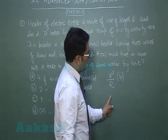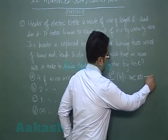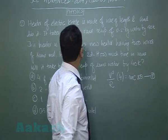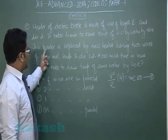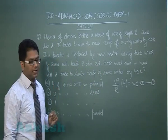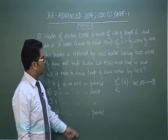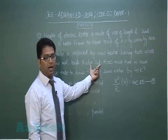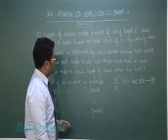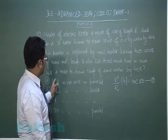Question number one: this heater is replaced by a new heater having two wires of same material, length, and diameter 2d. That means the resistance will be R by four because the cross-sectional area will be four times.